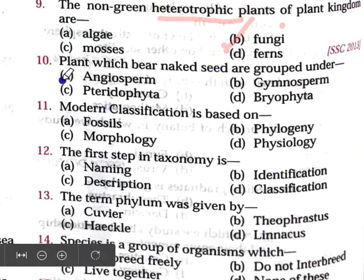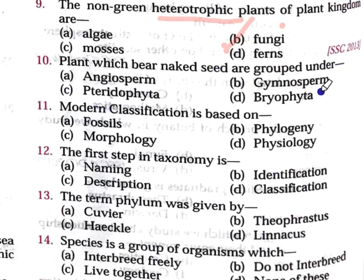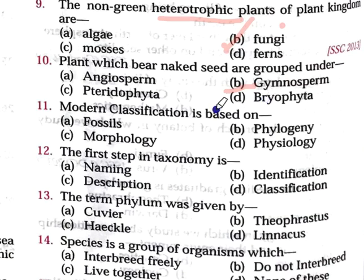Question number 10: Plants which bear naked seeds are grouped under — Option A: Angiosperm, Option B: Gymnosperm, Option C: Pteridophyta, Option D: Bryophyta. Option B is correct — Gymnosperms. Gymnosperms bear naked seeds; the ovules are not covered within ovaries, so they are exposed — hence they are called naked seed plants.